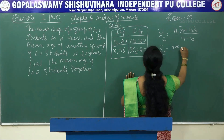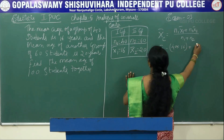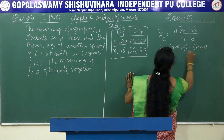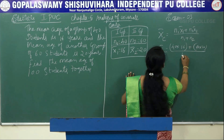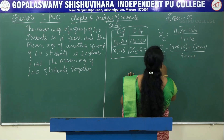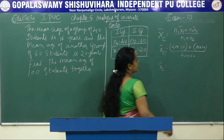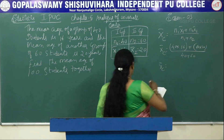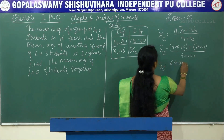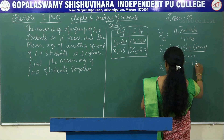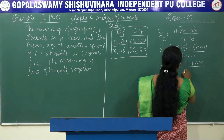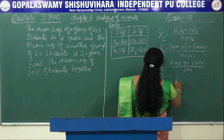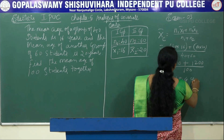Substituting the values: x̄c = (40 × 16 + 60 × 20) / (40 + 60). Simplifying, that is 640 + 1200 divided by 100. So x̄c equals 18.4 years.